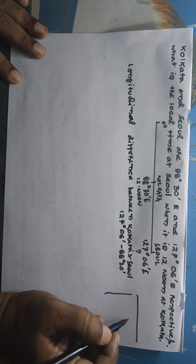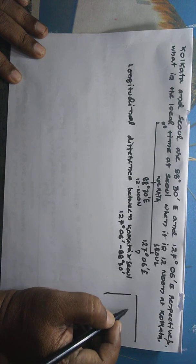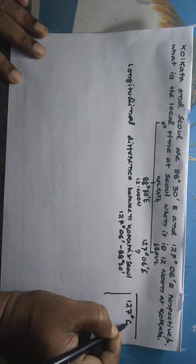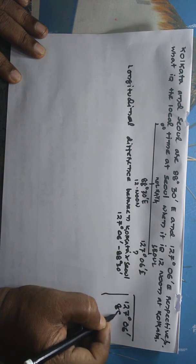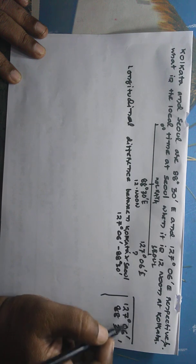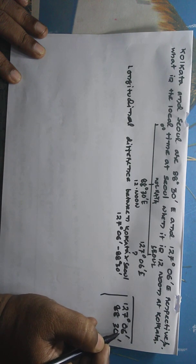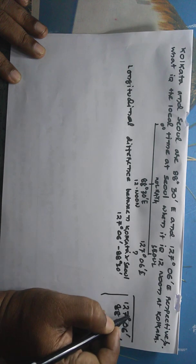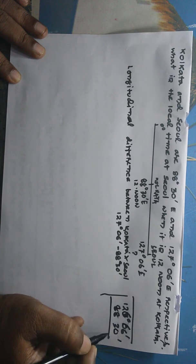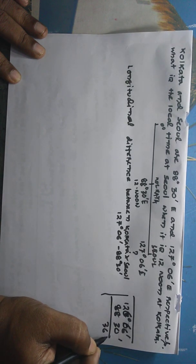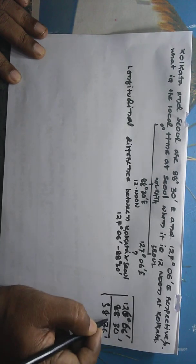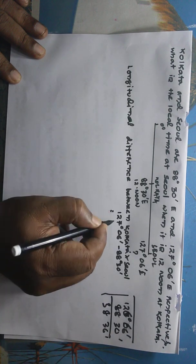You can do it in the rough also. 127 degree 6 minute, 88 degree 30 minute. Now if we do, so as not to do any mistake, we will transfer 1 degree from here to here, so it will become 126 and this will become 66. Now it will come 36 minutes, and here it will come as 38 degree 36 minutes.